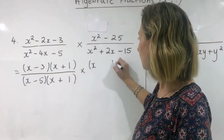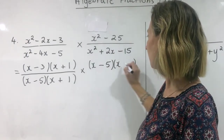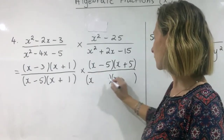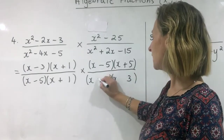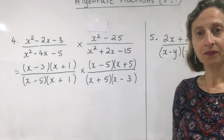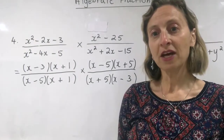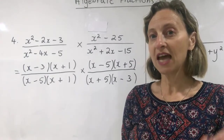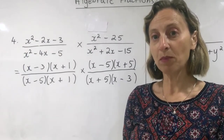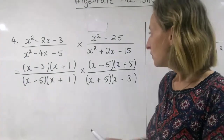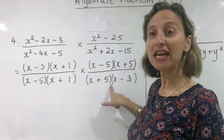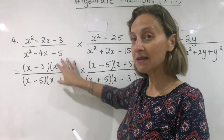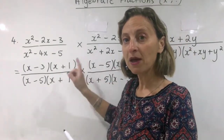I recognise the top as the difference of two squares: minus five, plus five. And on the denominator I have a monic trinomial. Five times three is fifteen: plus five, minus three. Now that we've factorised everything, we can cancel. Because it's a multiplication, I'm allowed to cancel anything from the top with anything on the bottom. I can cancel anything on the top with anything on the bottom — it doesn't matter which fraction it's in, as long as one is on the top and one is on the bottom.